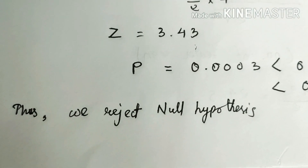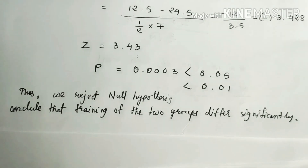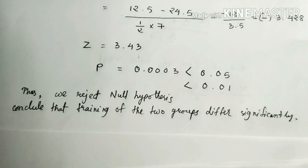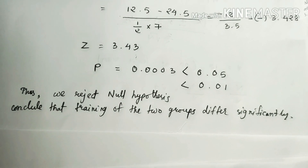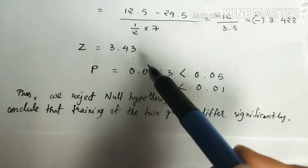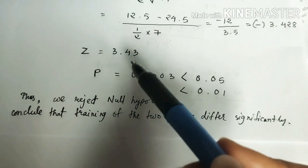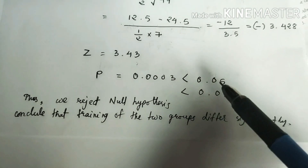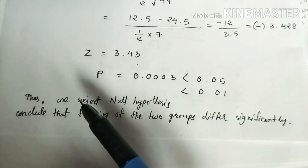This p-value of 0.003 is much smaller than both 0.05 and 0.01. Thus, we reject the null hypothesis and conclude that the training of the two groups differs significantly. If the value of p had been greater than 0.05 or 0.01, we would have accepted the null hypothesis. But since p equals 0.003, which is much smaller than both thresholds, we reject the null hypothesis. Thank you.